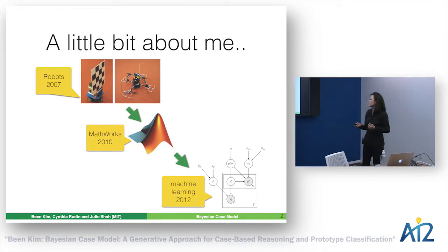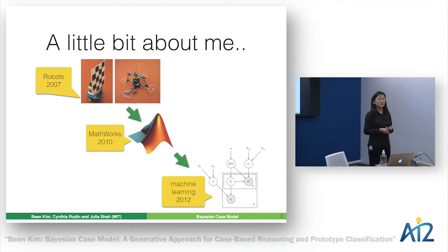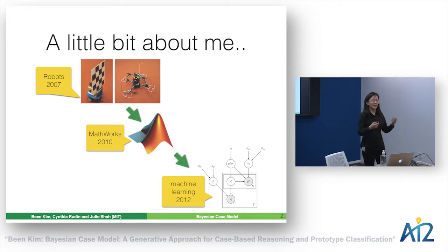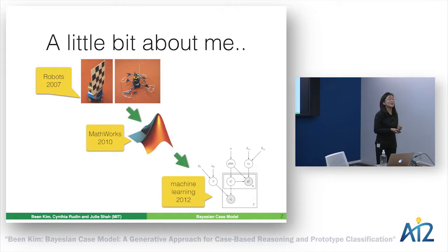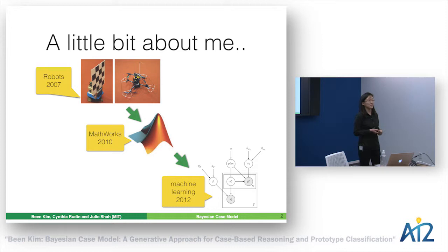Before jumping into the talk, I'll introduce myself a bit. I used to make robots — one on the ground, one in the air — but they broke down pretty often. So I finished my master's in robotics, went off to design computers, worked at MathWorks for a couple of years as a software engineer, before coming back to MIT to start my PhD in machine learning.